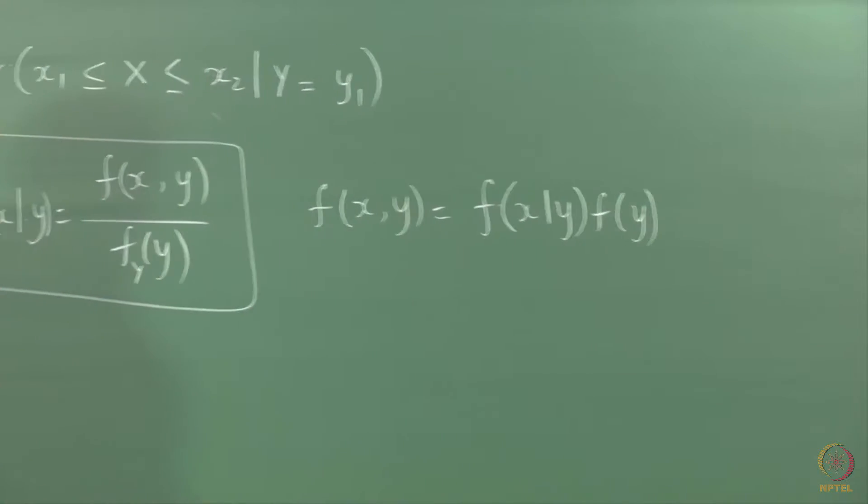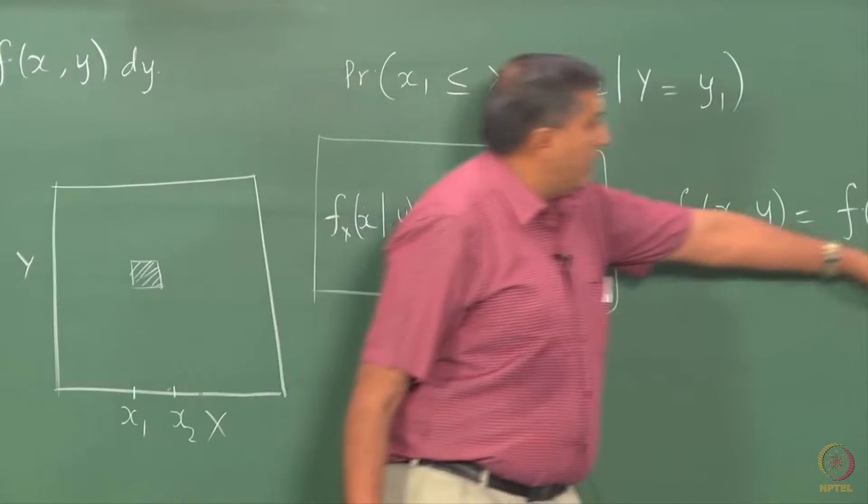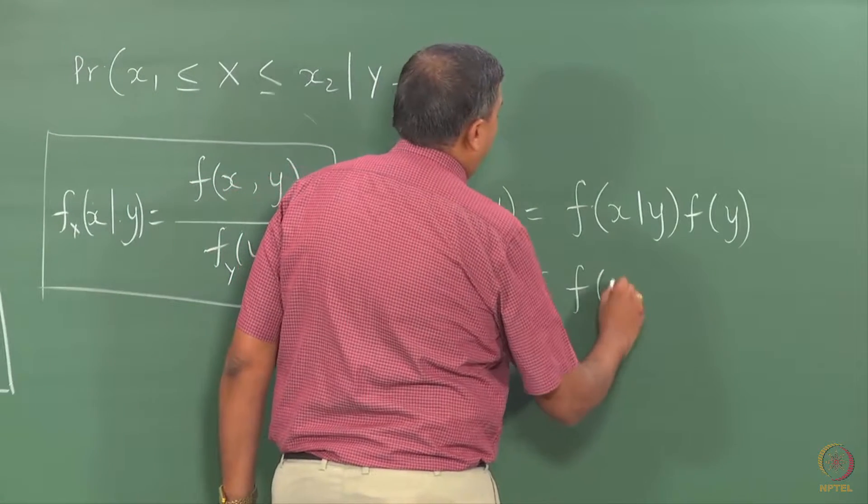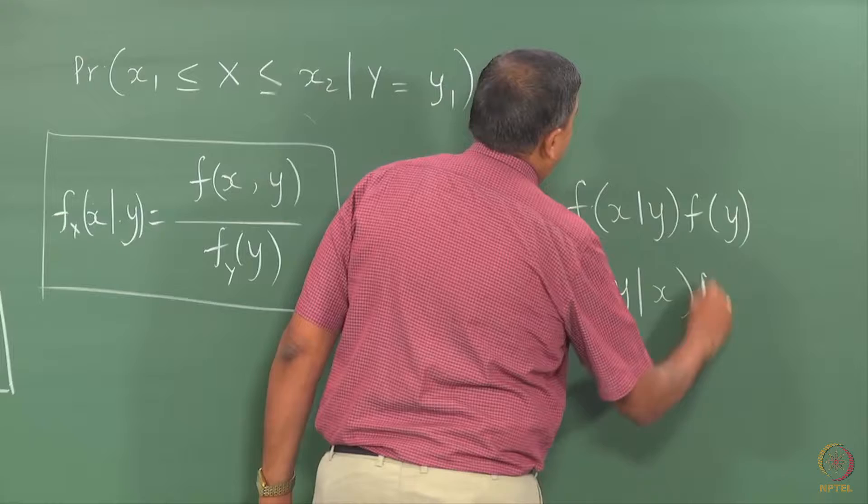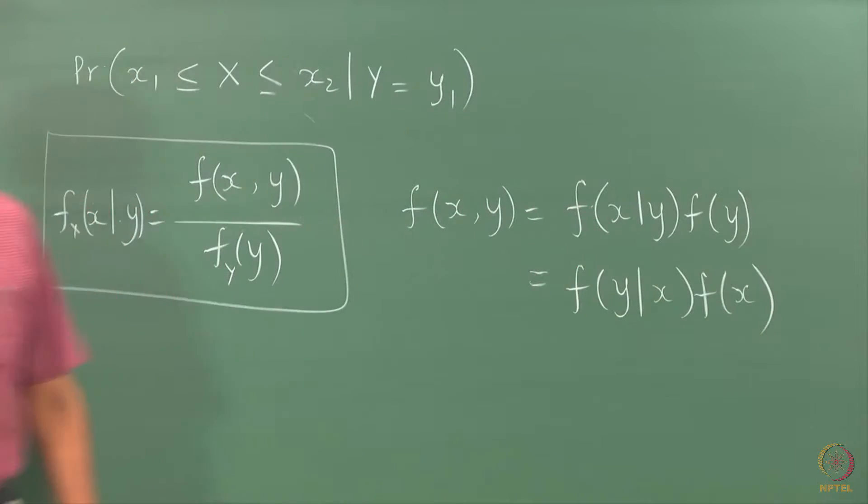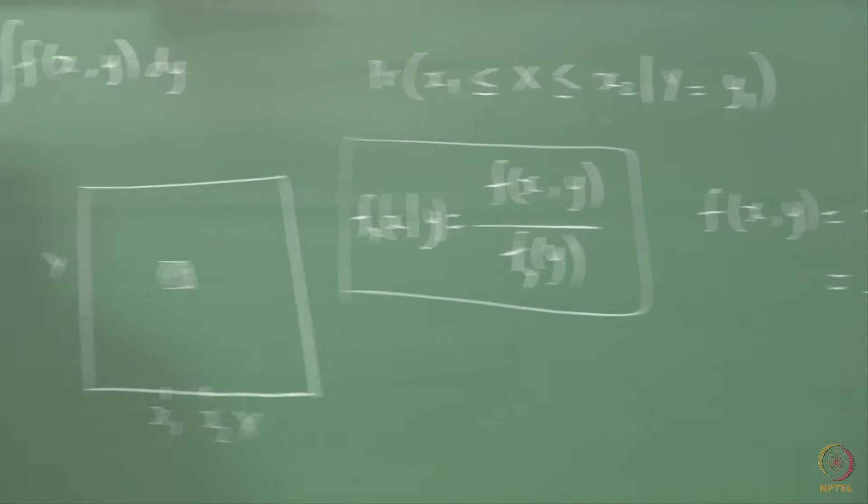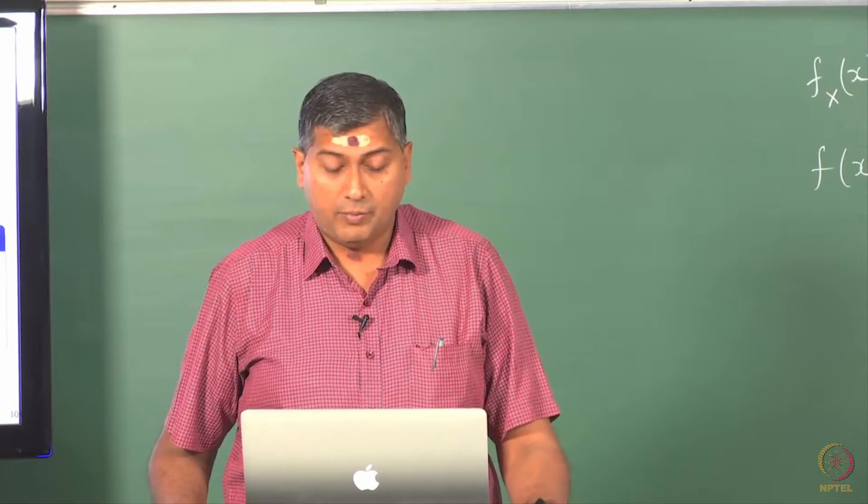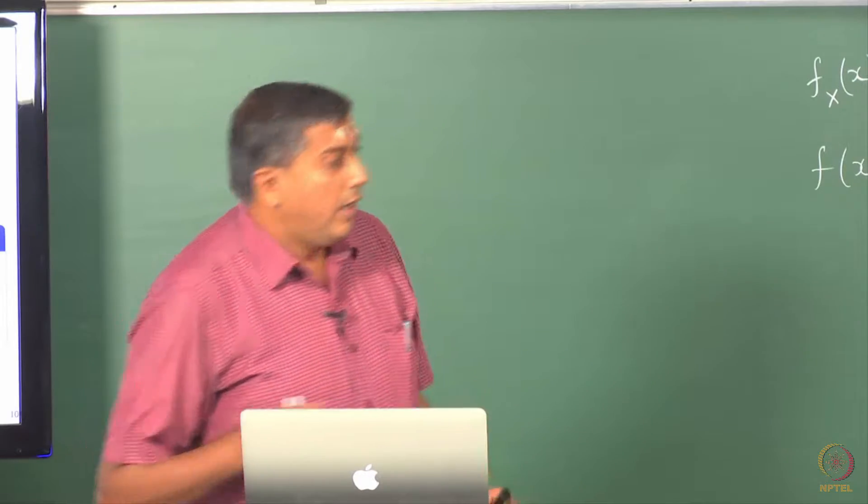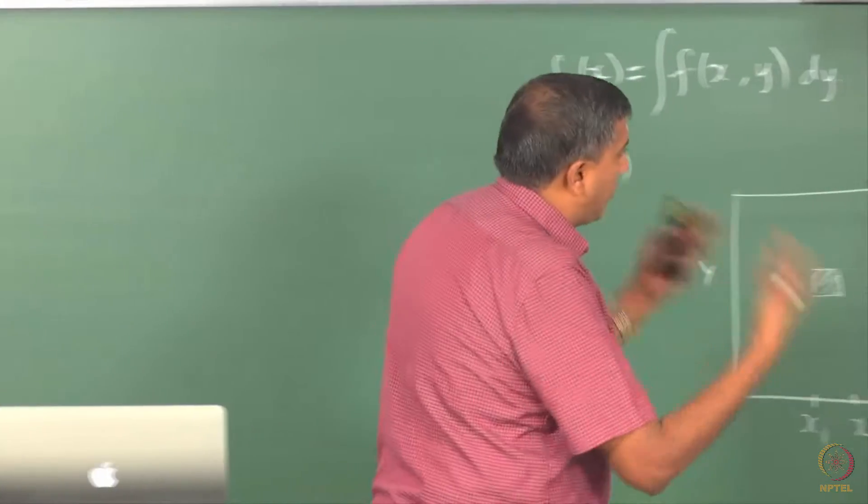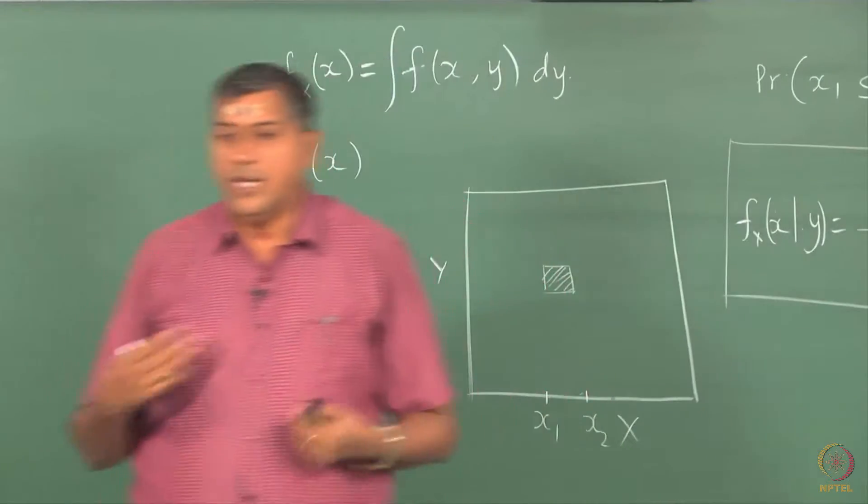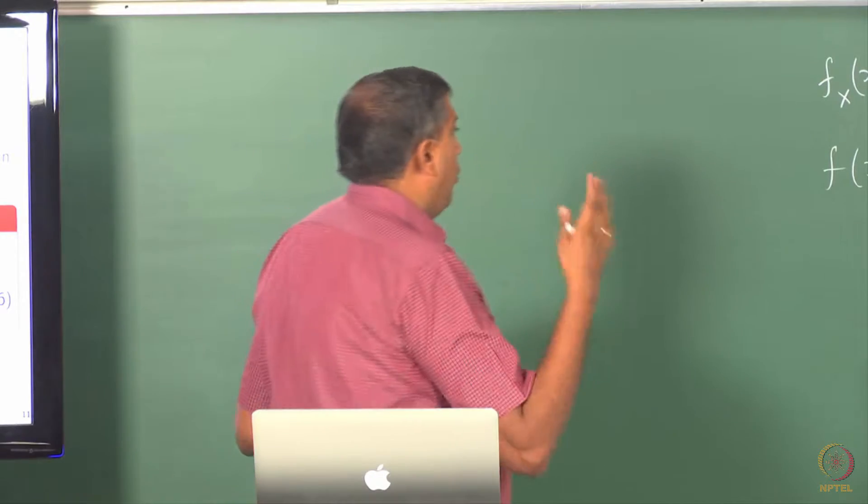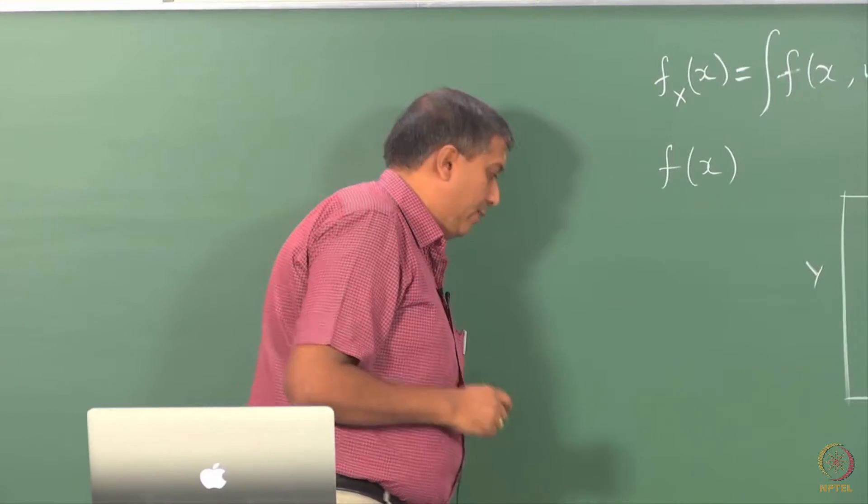I have stopped writing the subscripts; you have to understand that this is actually the marginal density of y. By straightforward extension, one can even write it this way. We will use this expression later on when we talk of maximum likelihood estimation. From this also stems the definition of independence, but first let us look at the notion of conditional expectation.